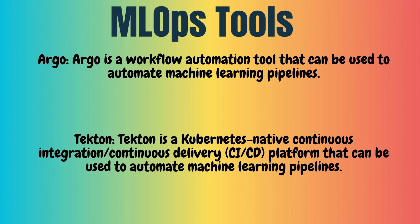Fifth, Tekton — a Kubernetes-native CI/CD platform that can be used to automate machine learning pipelines. These are five key tools to know, though there are many more out there. You can check the internet for a deeper understanding of MLOps and the tools used in real-time projects. I hope you enjoyed this video — thank you so much, and we'll see you in another video.